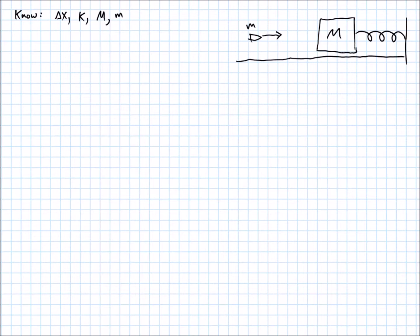The mass is sitting on a frictionless surface. It doesn't look like it, but sure. We know the k constant of the spring. We know the mass of the bullet and the mass of the block.